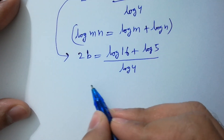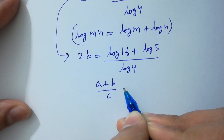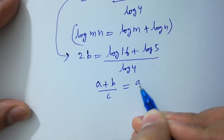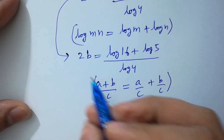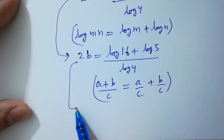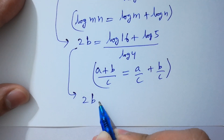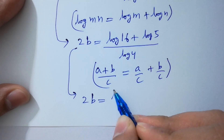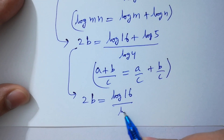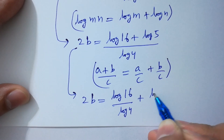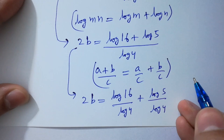Since a plus b over c equals a over c plus b over c, so 2B equals log 16 over log 4 plus log 5 over log 4.